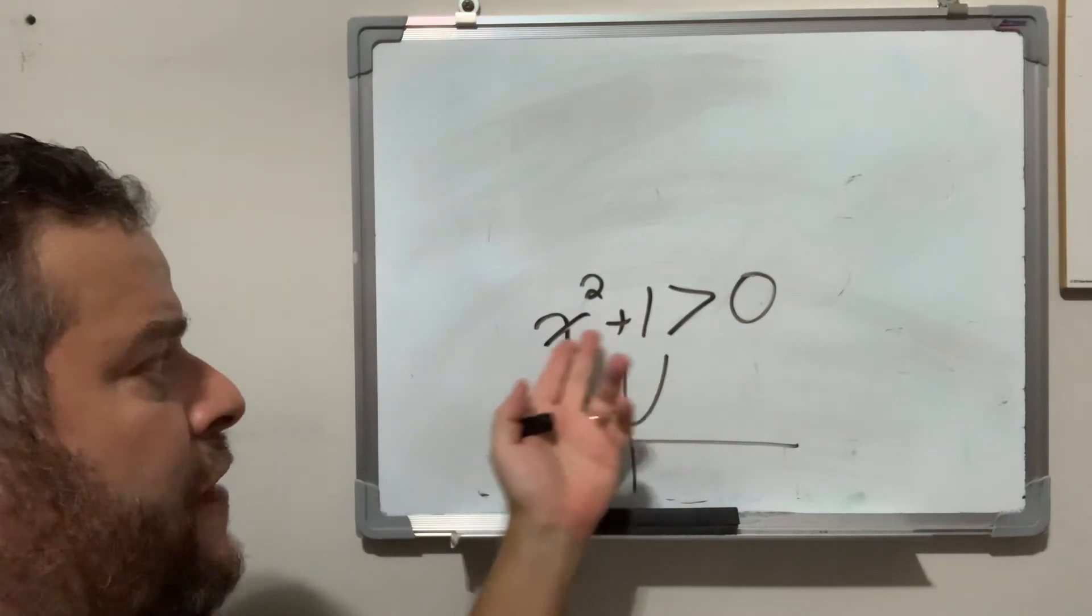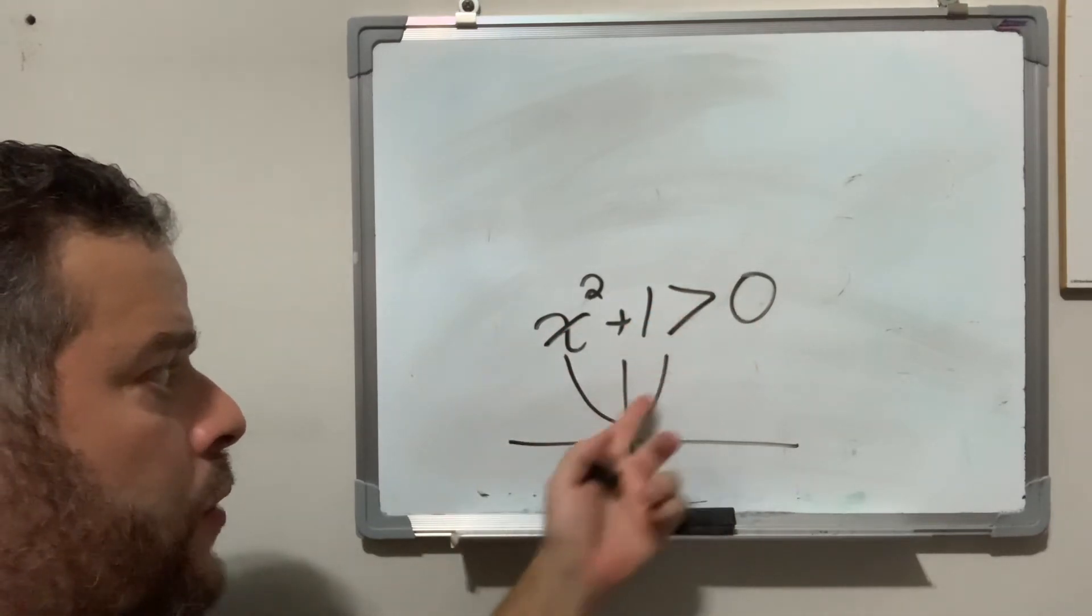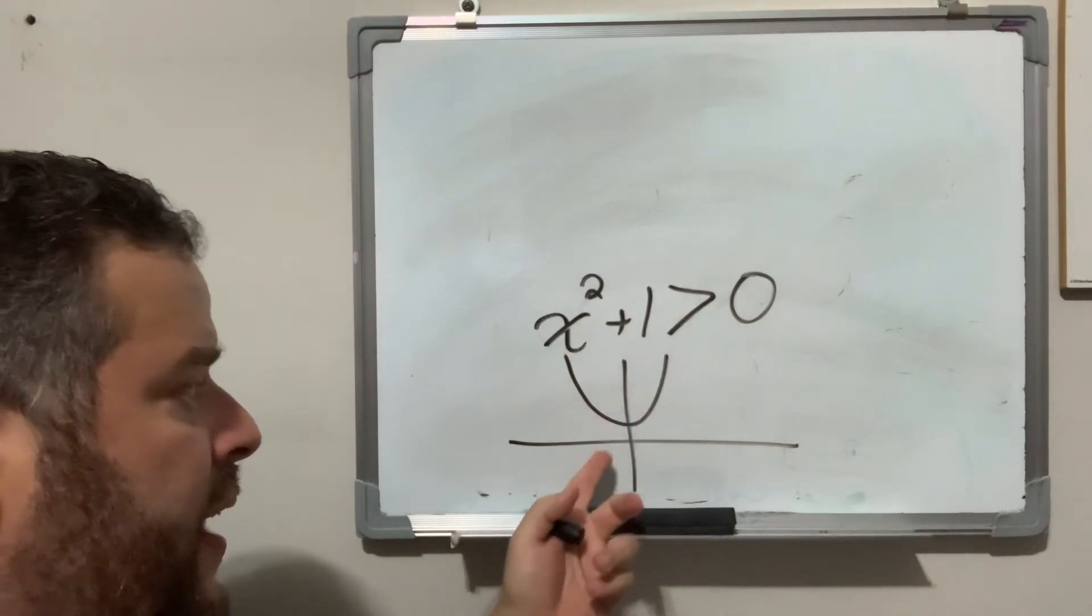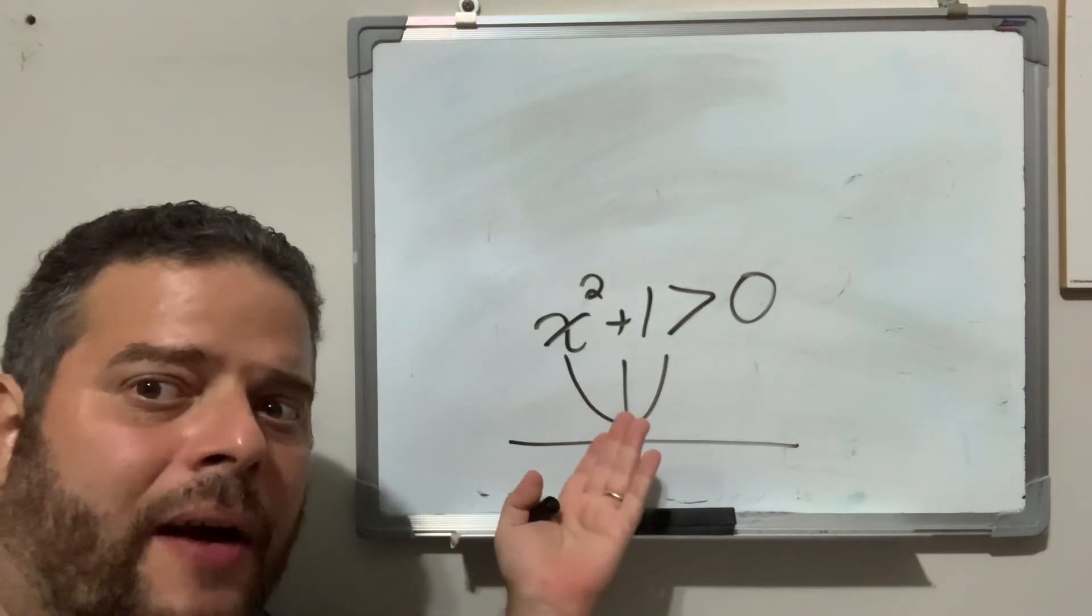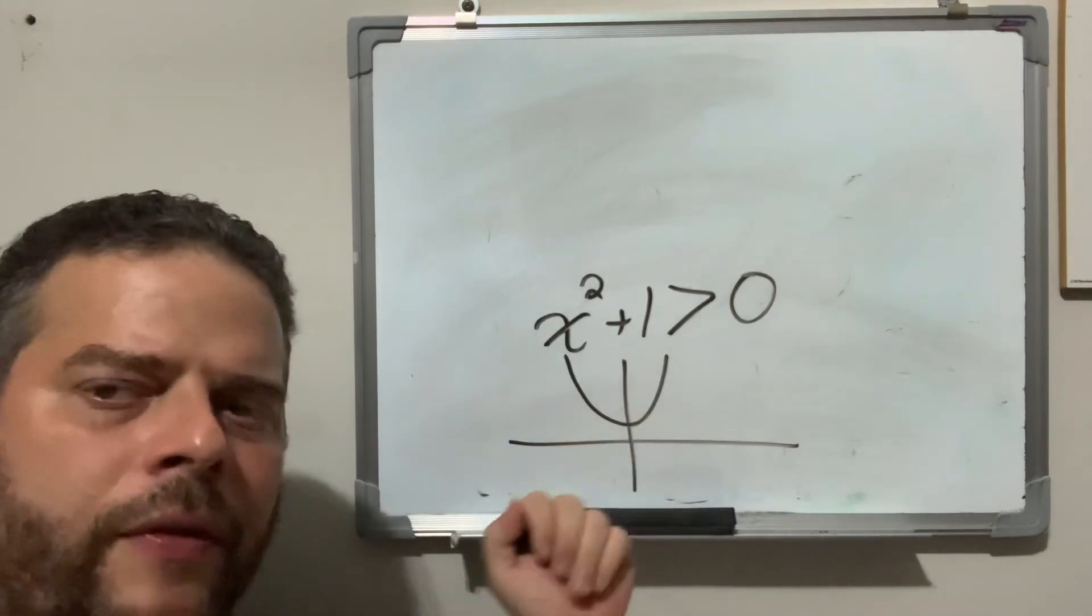Pretty much any value that you can plug in here will be greater than zero, because there is no value in my parabola that is less than zero. So, in this particular scenario, the solution would be all real numbers. Any number you plug in will be a solution.